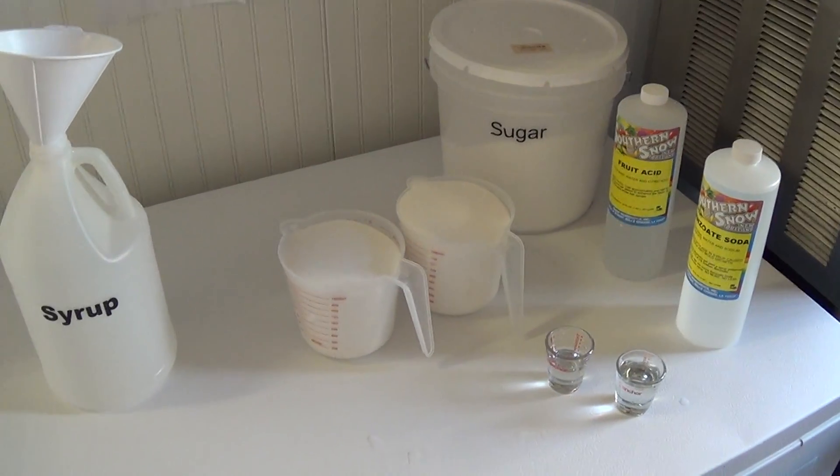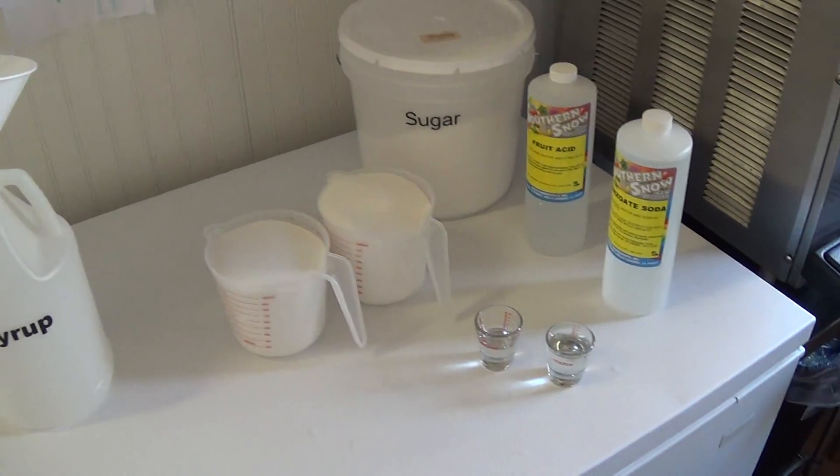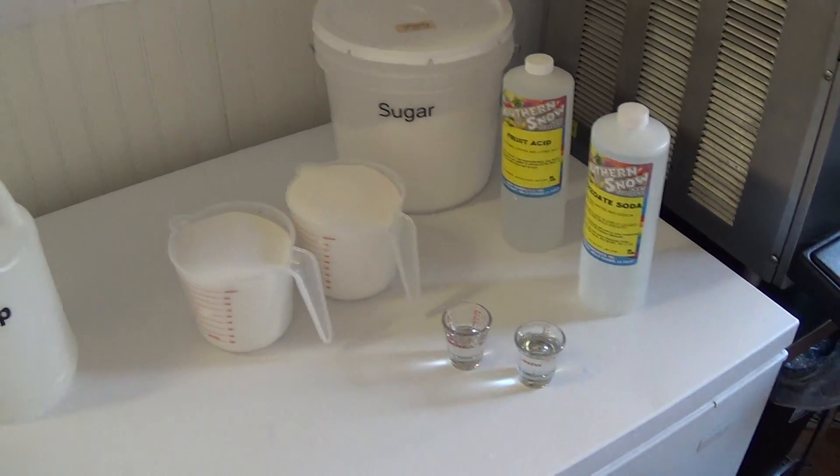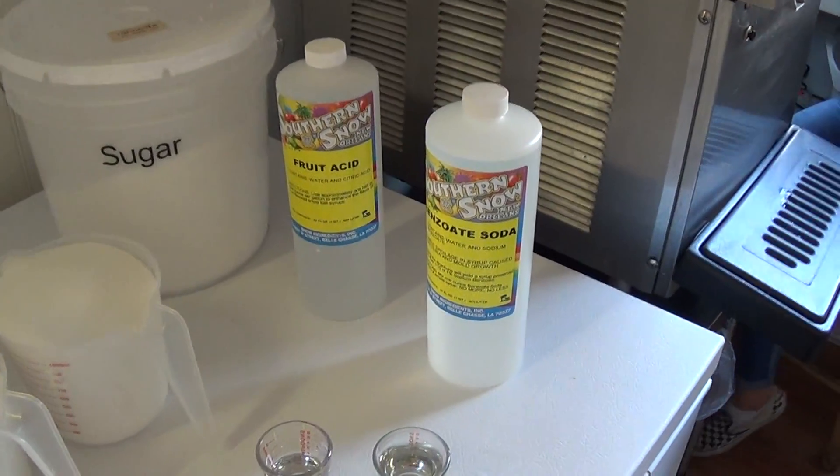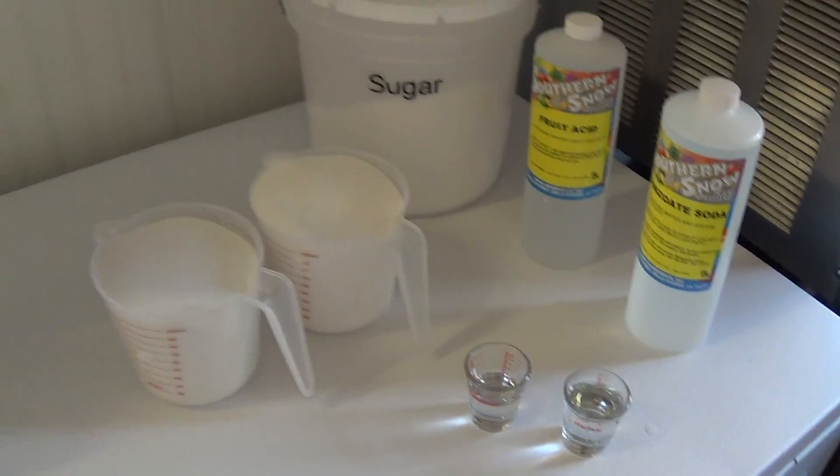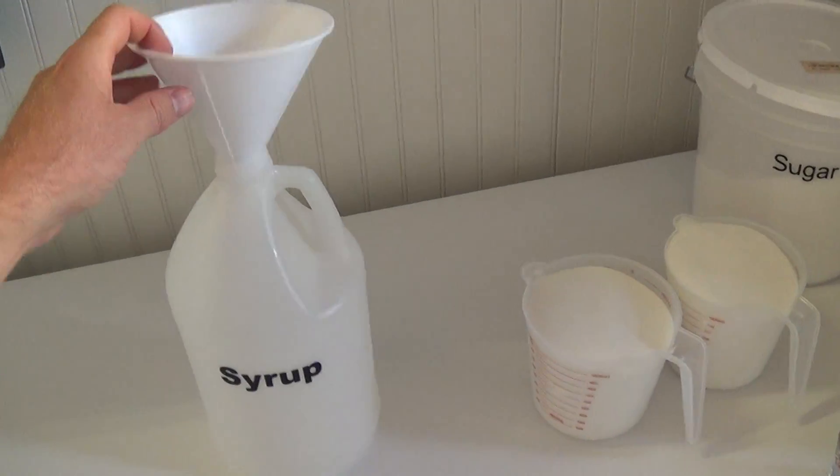So what you need is 10 cups of sugar, an ounce of sodium benzoate or benzoate soda, a fourth of an ounce of fruit acid, and a one gallon container.